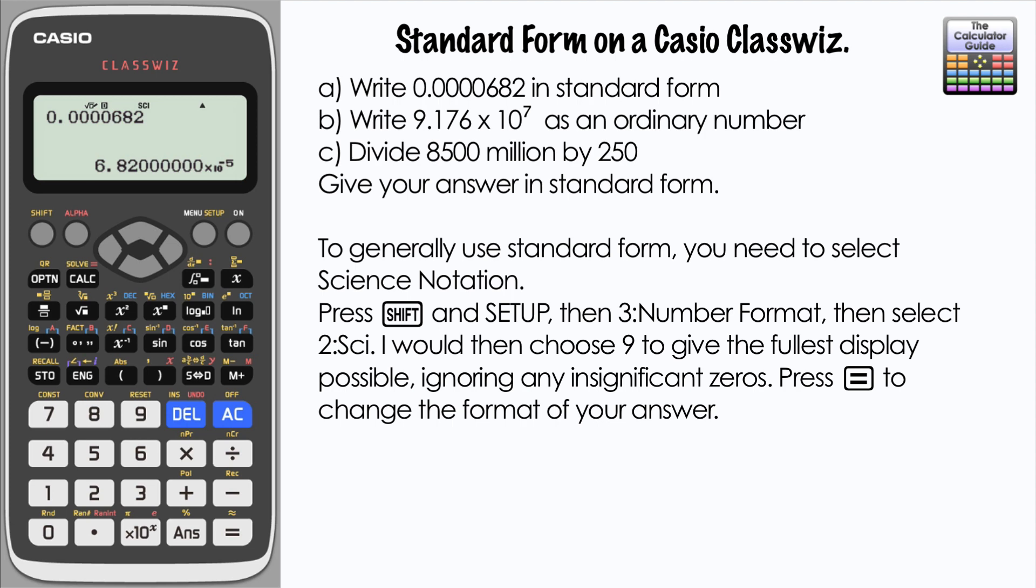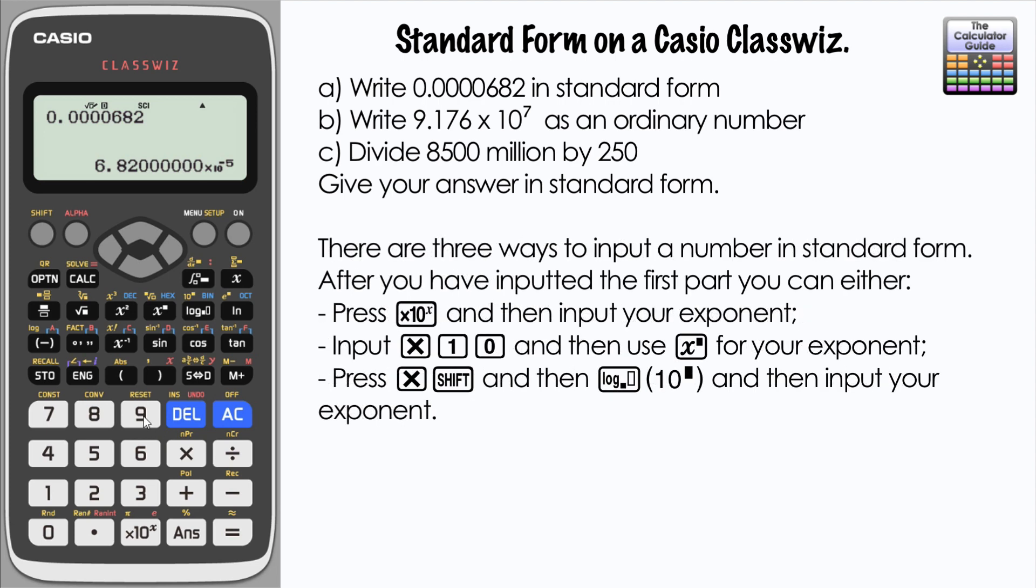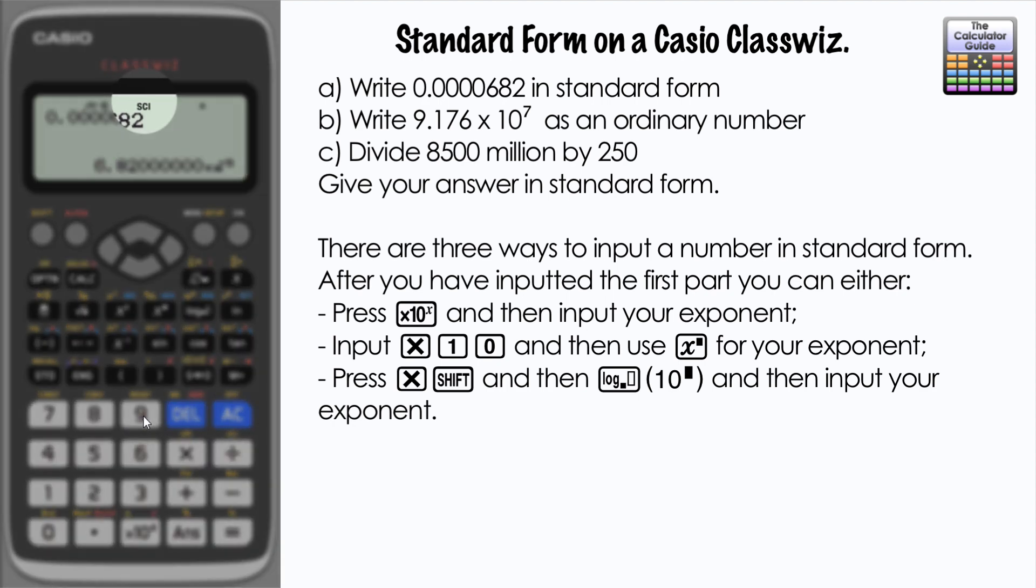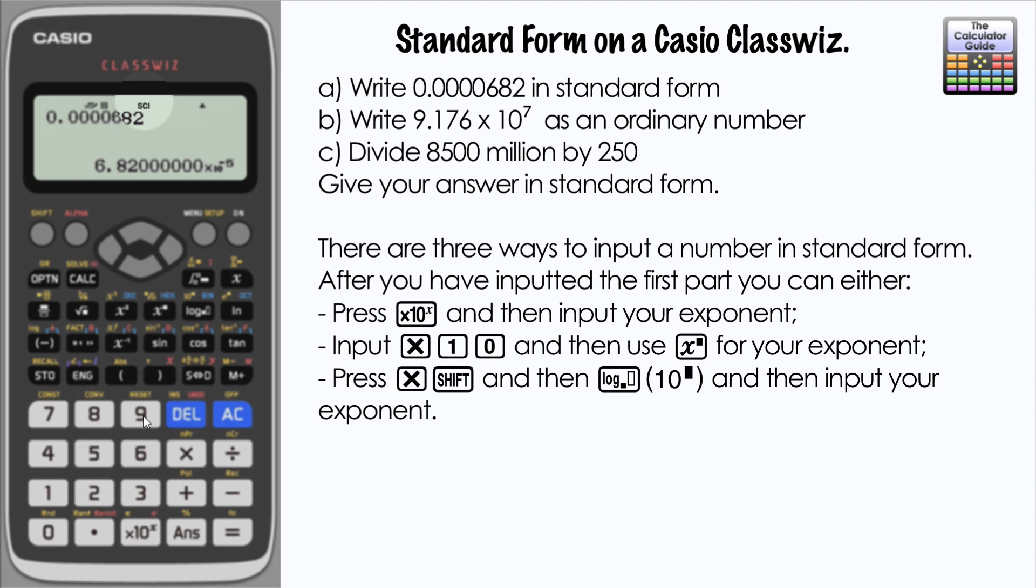Let's have a look at part B: write 9.176 times 10 to the 7 as an ordinary number. We're currently in science notation format. You can see there's a little 'sci' here at the top which just confirms that for us.